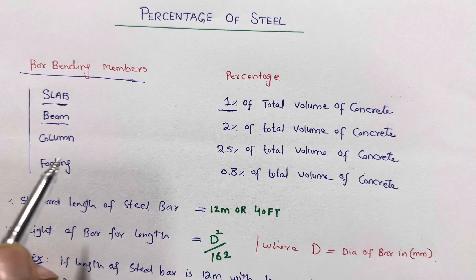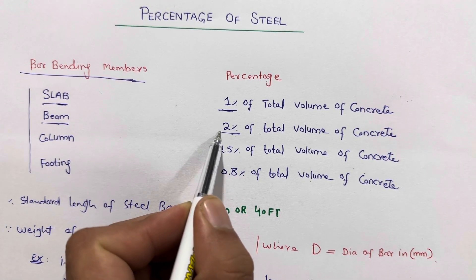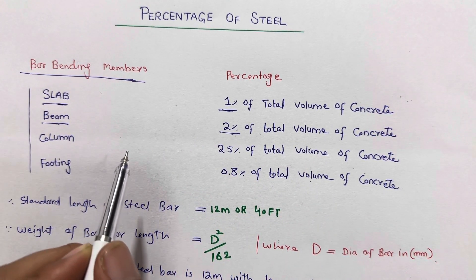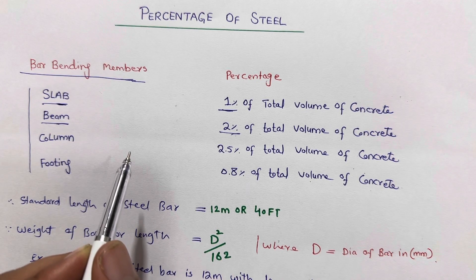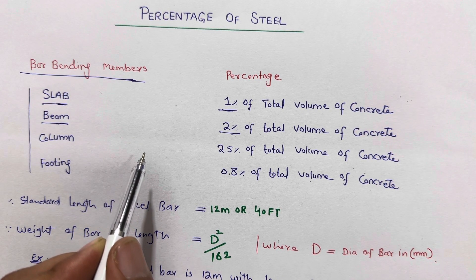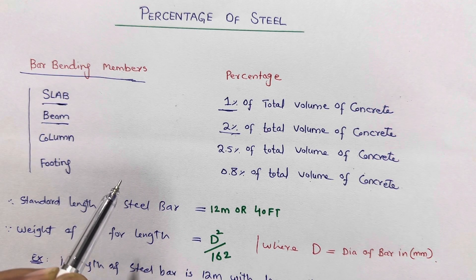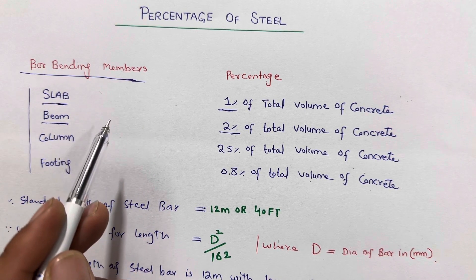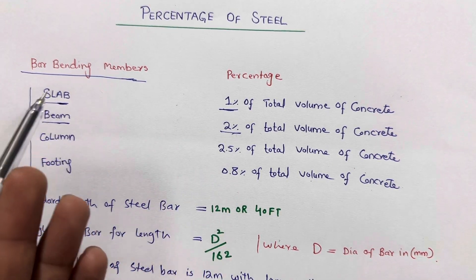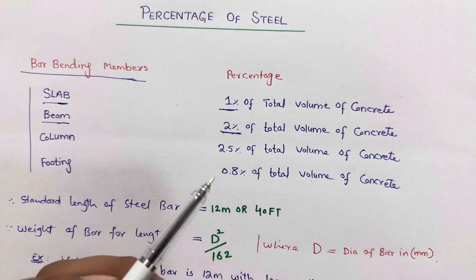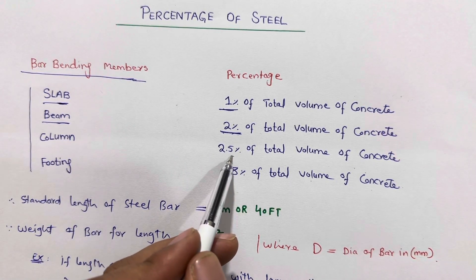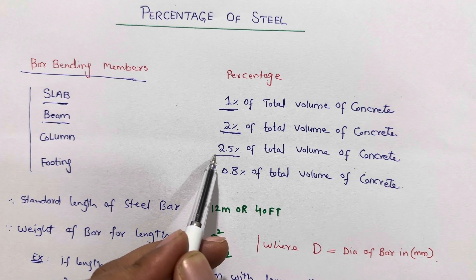The next structure is the beam. For a beam we use two percent of steel, meaning two percent of the total volume of concrete. To get the volume of a beam: length of the beam, then depth of the beam, and width of the beam gives the total volume. From that total volume of concrete you can find the total steel reinforcement, which is two percent of the total volume of concrete, especially for beam.